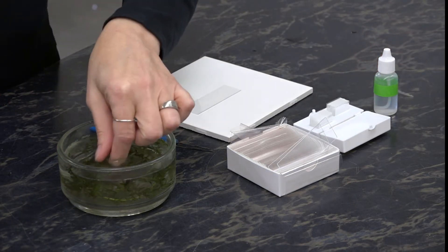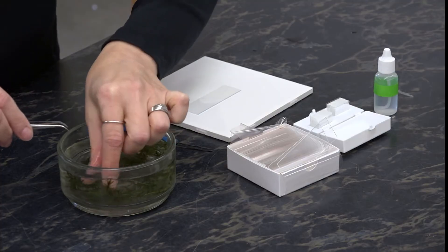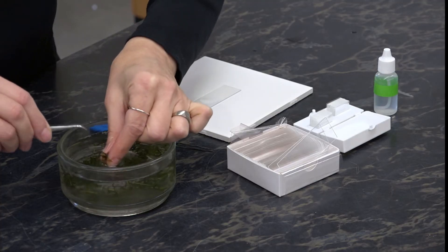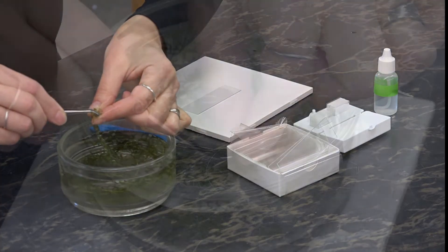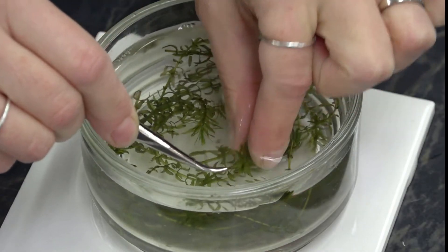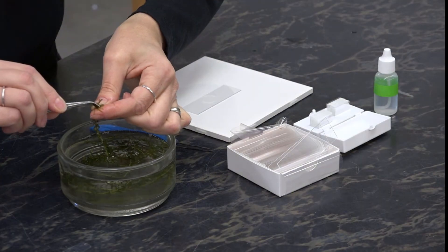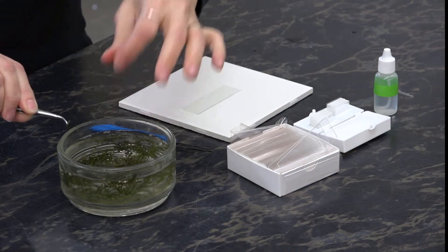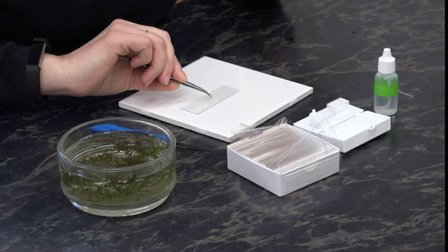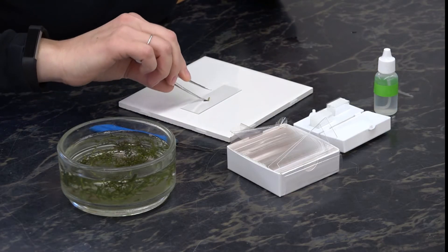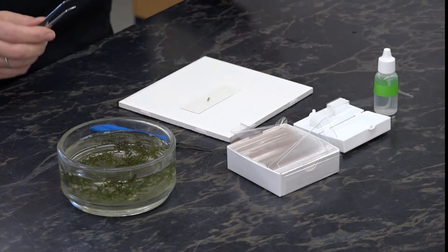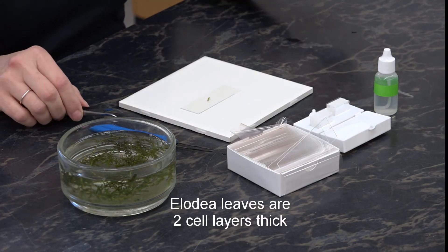You want to select a leaf from the top of the Elodea plant and place that in the same orientation on your slide, so the upper surface of the leaf is upward on the slide.